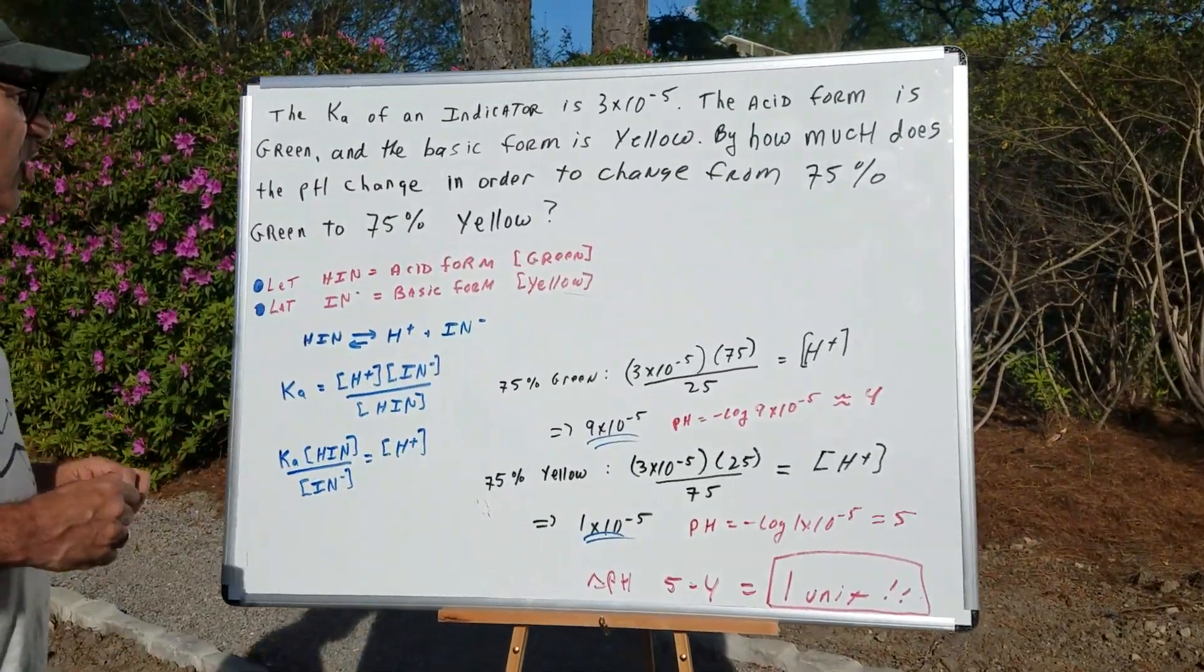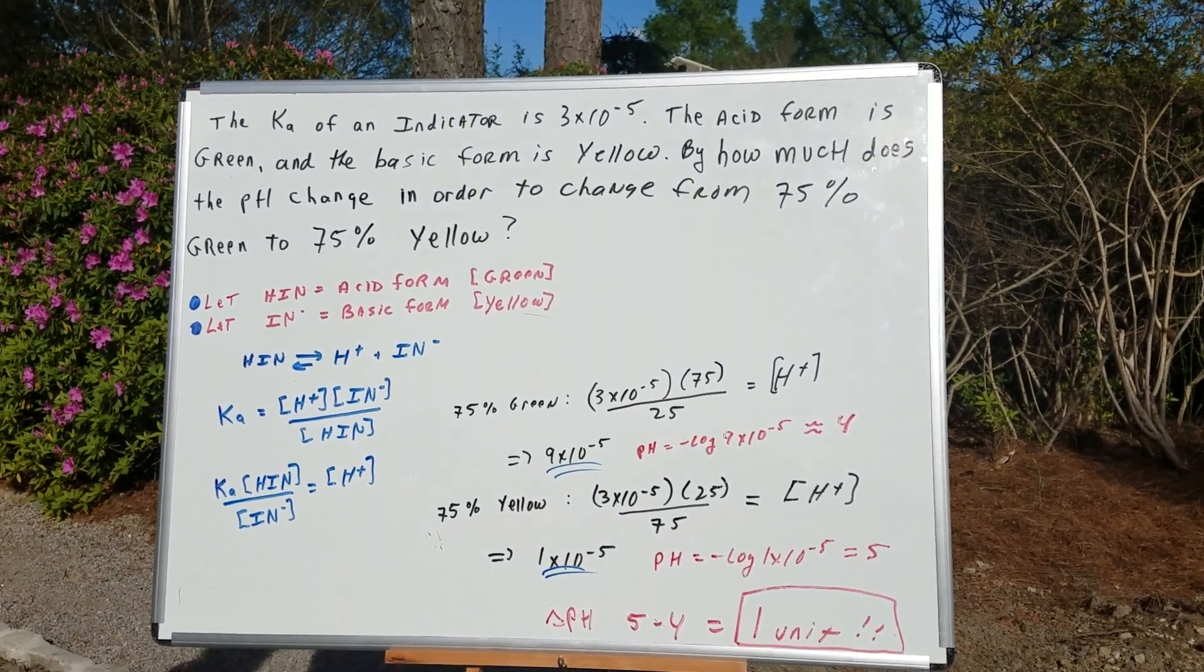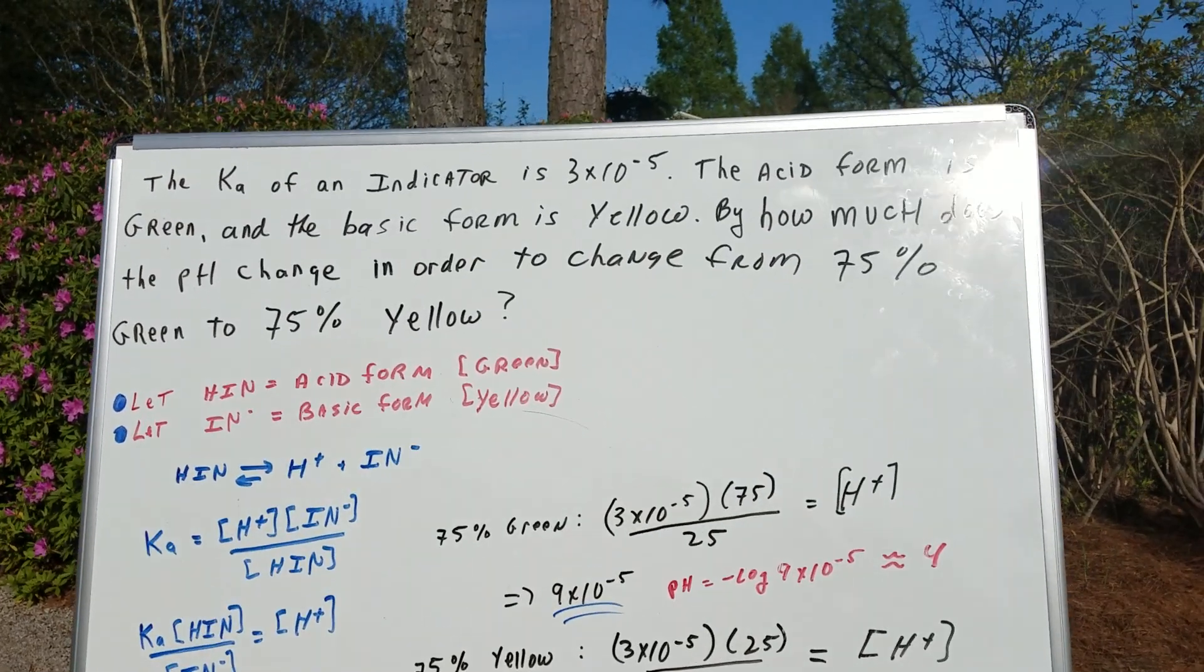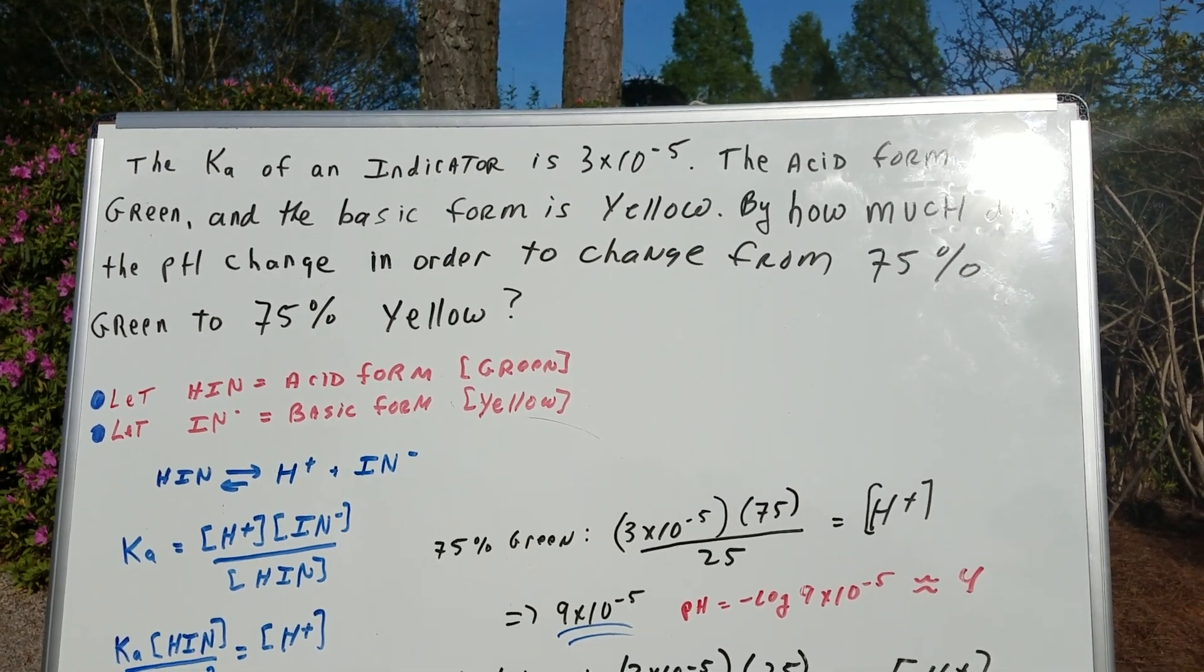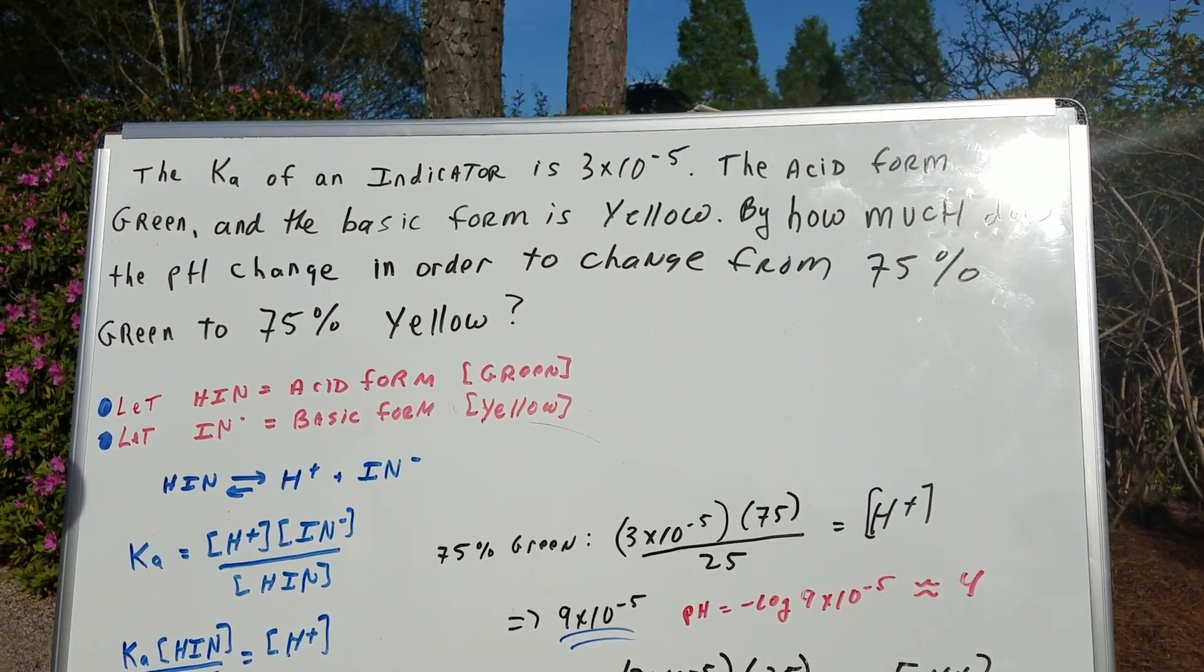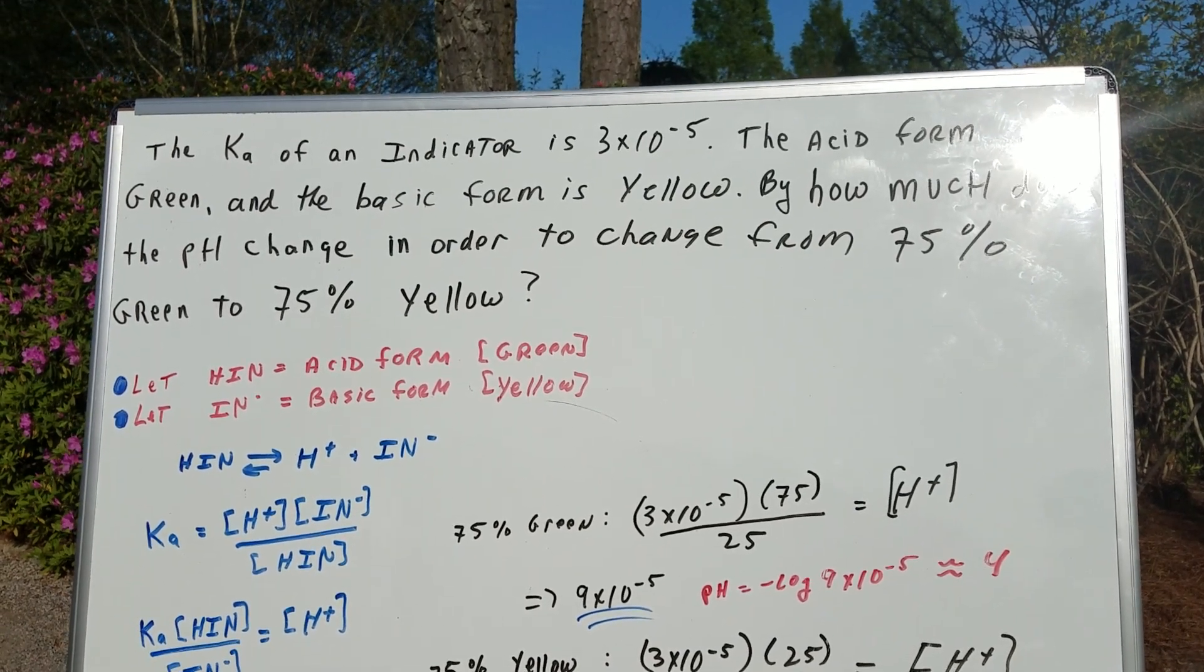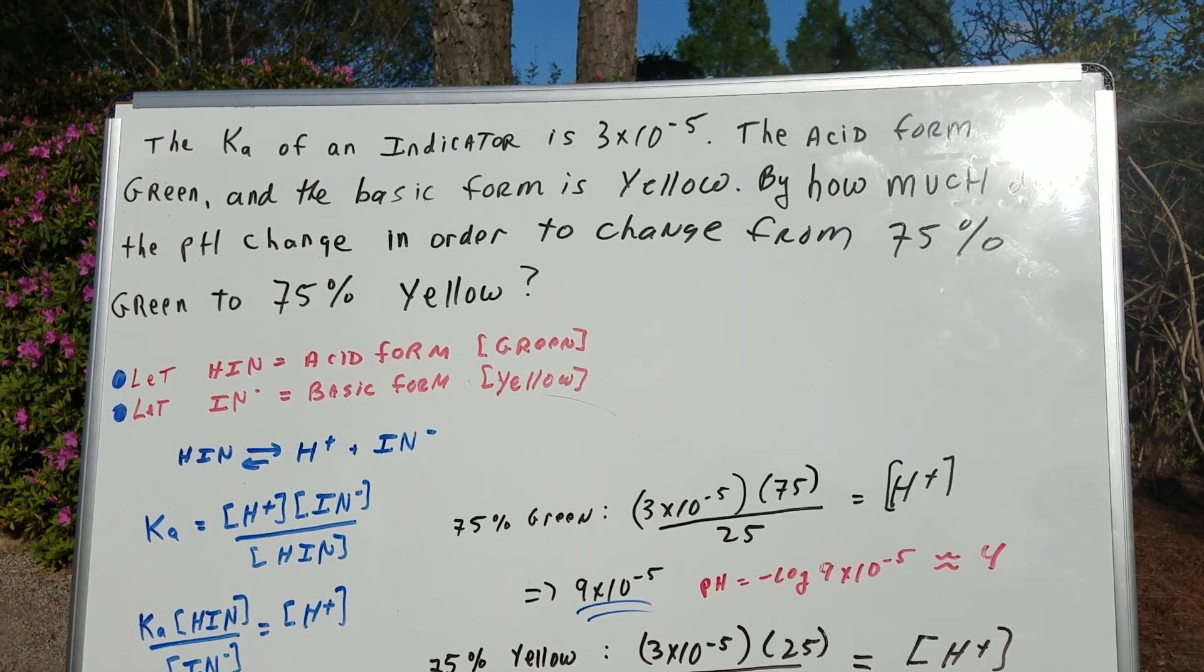I've got some really good questions on indicators in the Destroyer, but I came up with a question that I think you're going to find really challenging. The Ka of an indicator is 3×10⁻⁵. The acid form is green, and the basic form is yellow. By how much does the pH change in order to change from 75% green to 75% yellow?